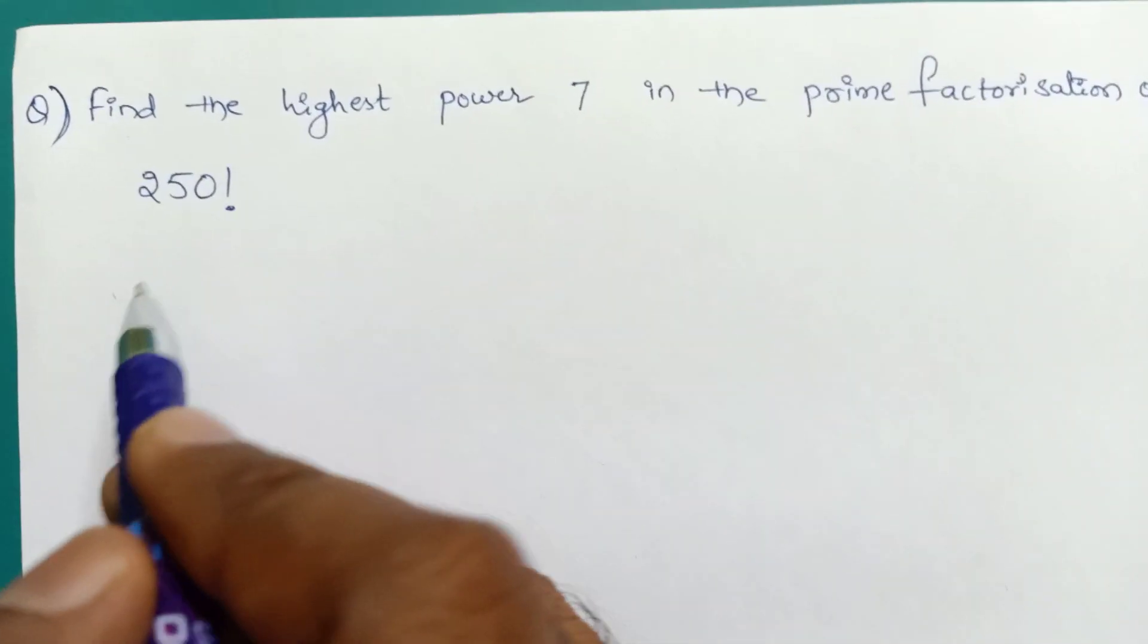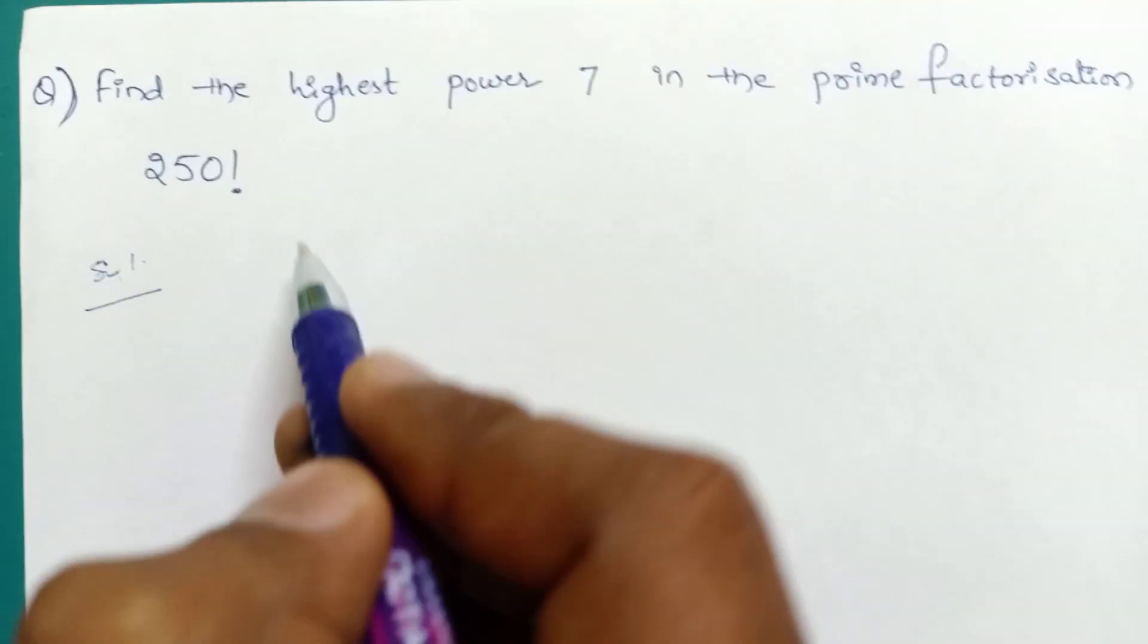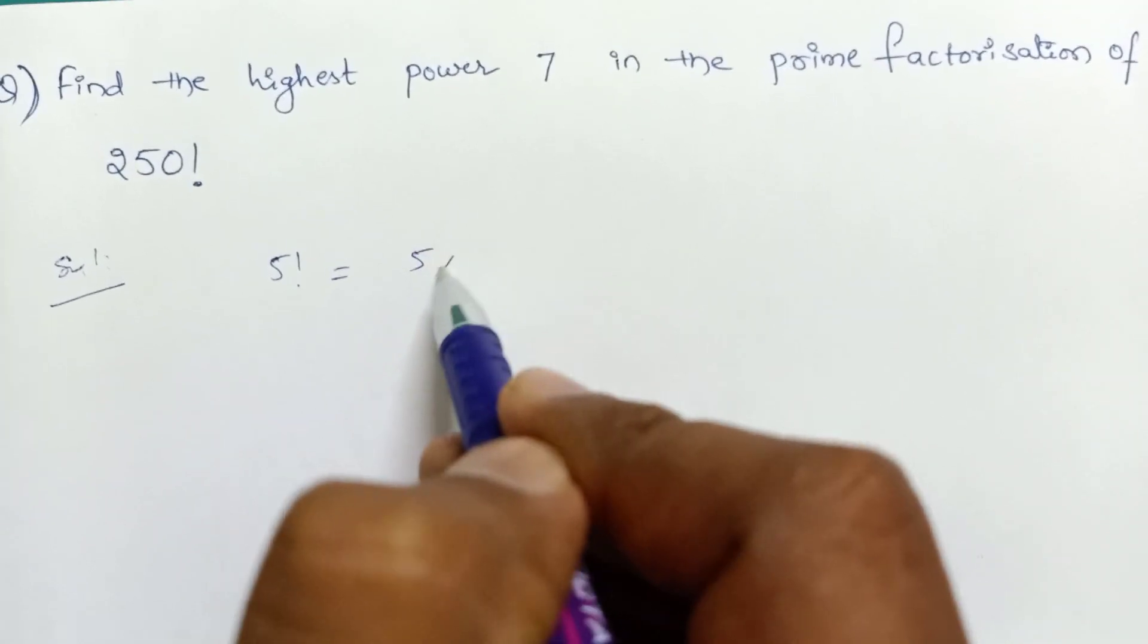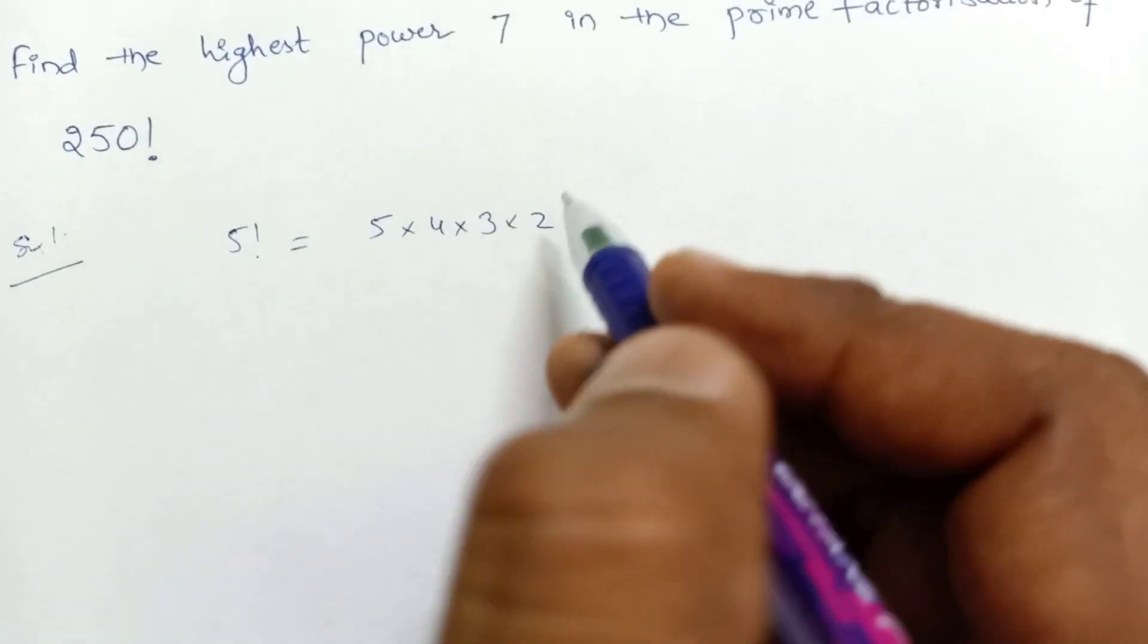Let's look at this question with an example. Let's look at 5 factorial. 5 into 4 into 3 into 2 into 1.